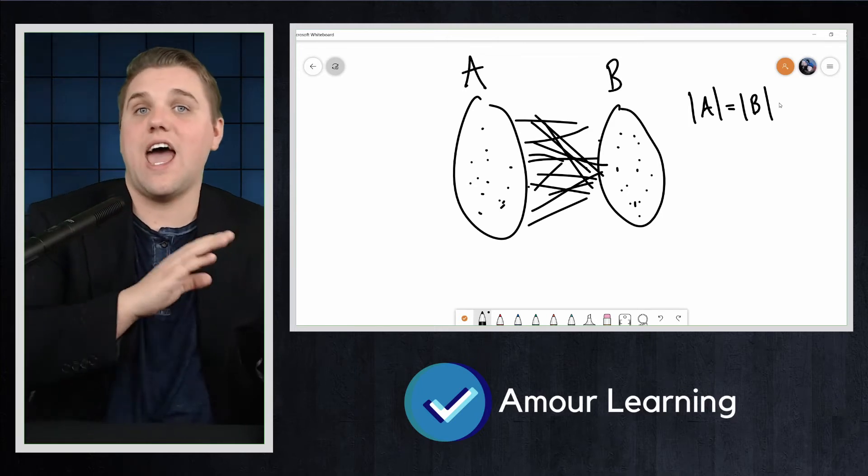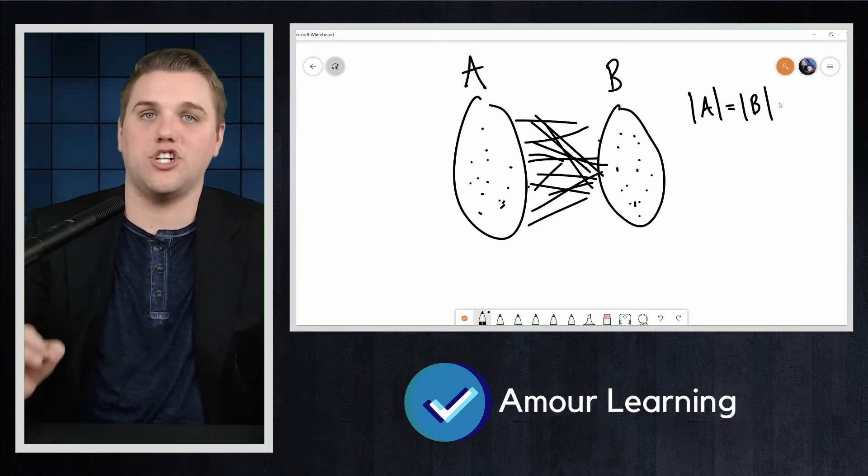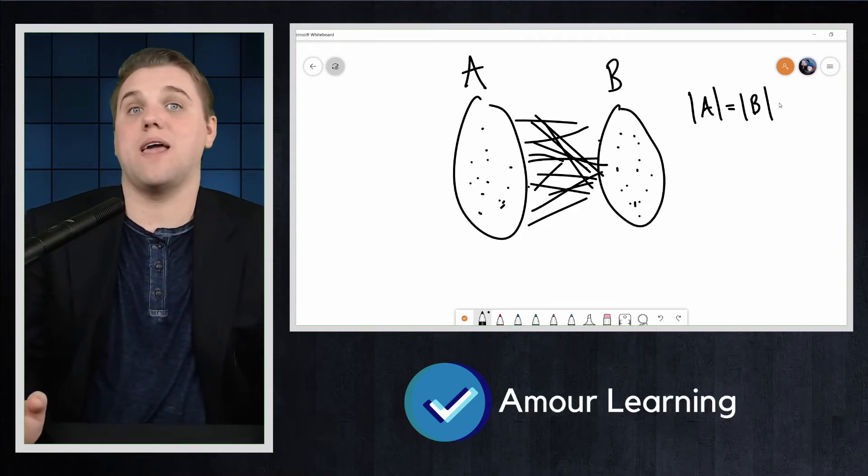So this says that every vertex in the graph belongs to exactly one edge in the matching. Some context might make this easier.